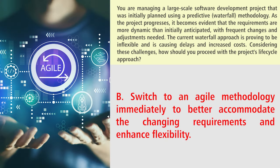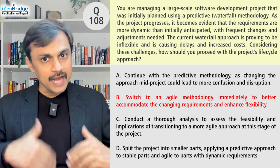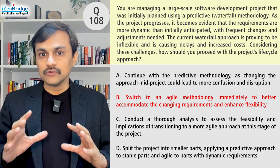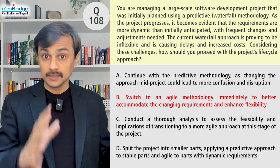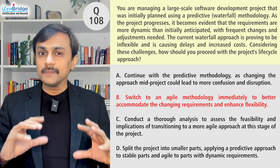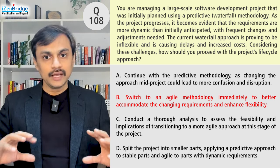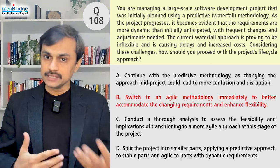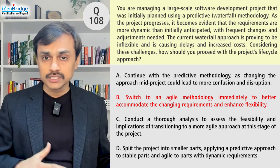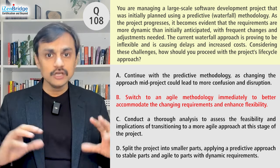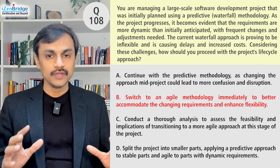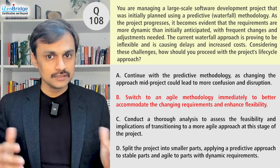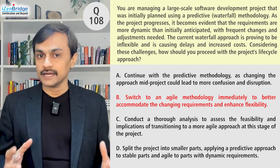Option B: switch to an agile methodology immediately to better accommodate the changing requirements and enhance flexibility. This option is directly saying to act on it. However, since we already have artifacts in place, pure agile may not work out. Directly saying the current approach isn't working and jumping to agile is not a good idea. As we've learned, we do analysis, look at project parameters, work with stakeholders, and after facilitating conversation, we make the decision. This option is making me act too quickly, so I'm a little suspicious — let's see if there's a better option.